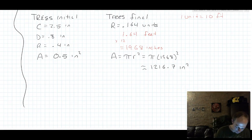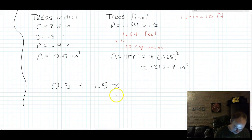Just like before, we know that the trees start at an area of 0.5. They grow at a rate of 1.5 square inches per year. X will represent the number of years. And eventually these trees are going to equal an area of 1,216.7.